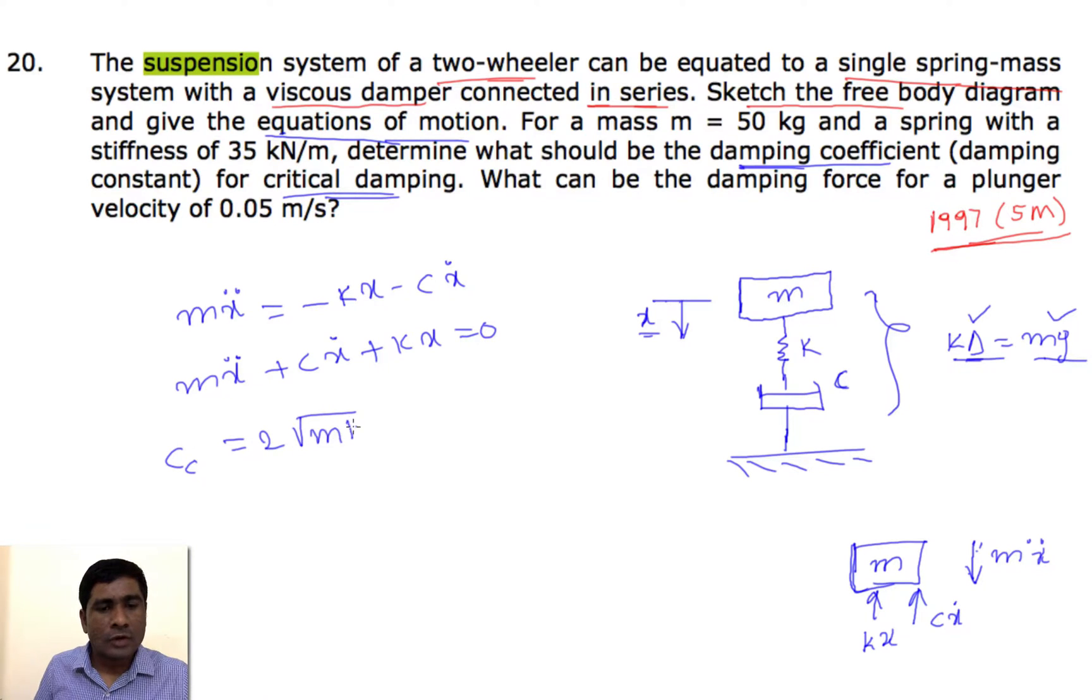Here m is given 50 kg and k is given as 35 kilo Newton - don't forget the kilo. So here this is 2 into 50 into 35 into 10 power 3, then you will get 2.645 kilo Newton second per meter.